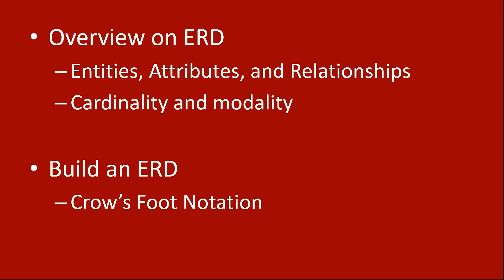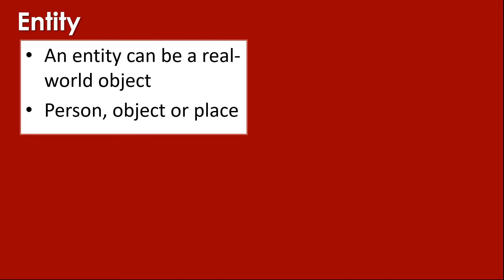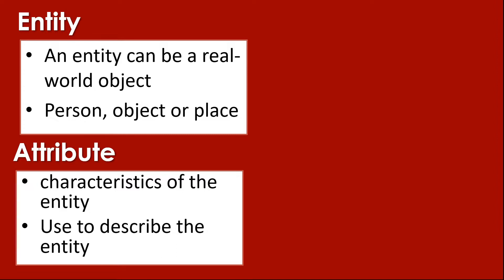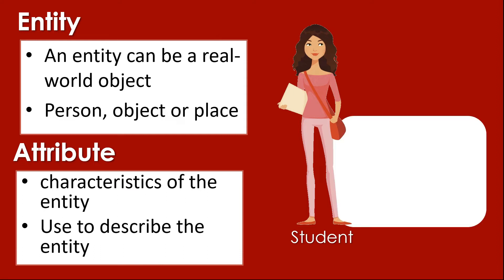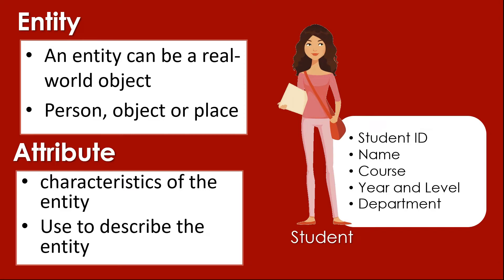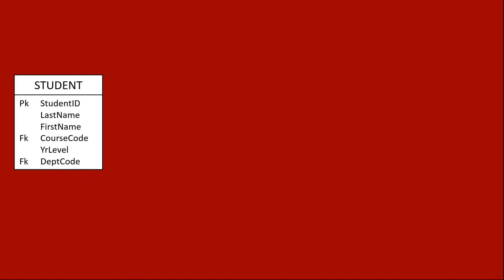And of course we're going to build an ERD using the crow's foot notation. So first let's discuss what an entity is. An entity can be a real world object - it can be a person, object, or a place. Then we have what we call attributes. Attributes are the characteristics of an entity; it is used to describe the entity. For example, let's say we have a student - that student is the entity. The attributes for a student can be the student ID, name, course, year and level, and department.